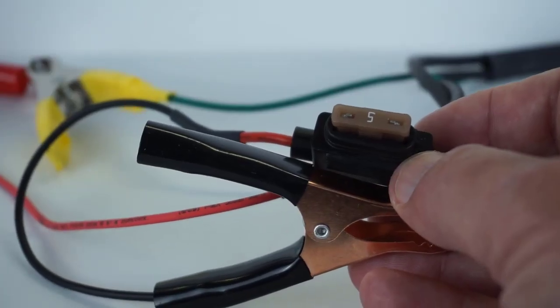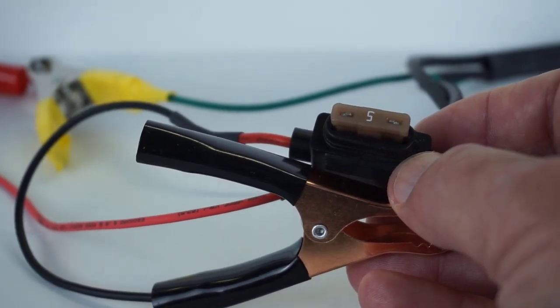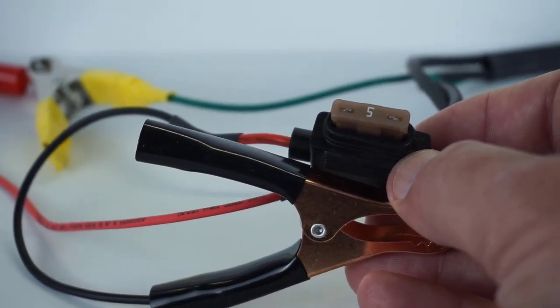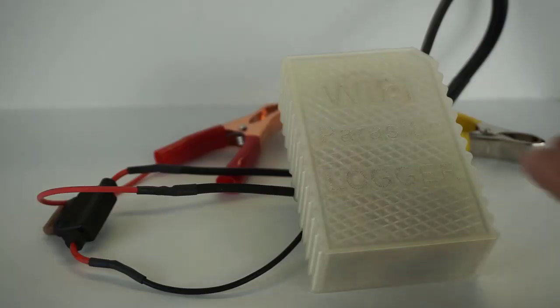I want to bring your attention to this 5-amp inline fuse and that it was placed on the negative battery clamp intentionally.